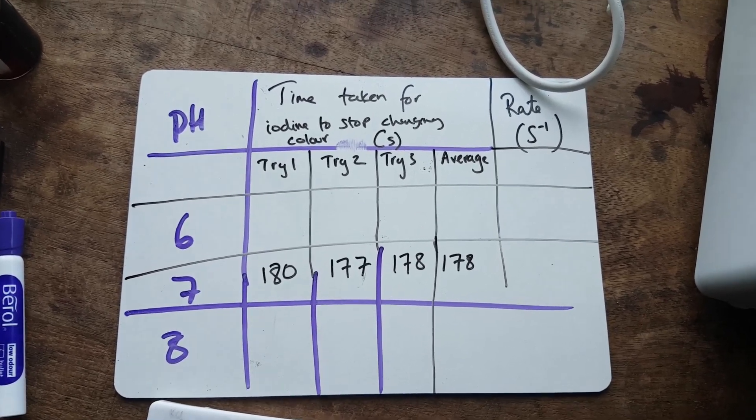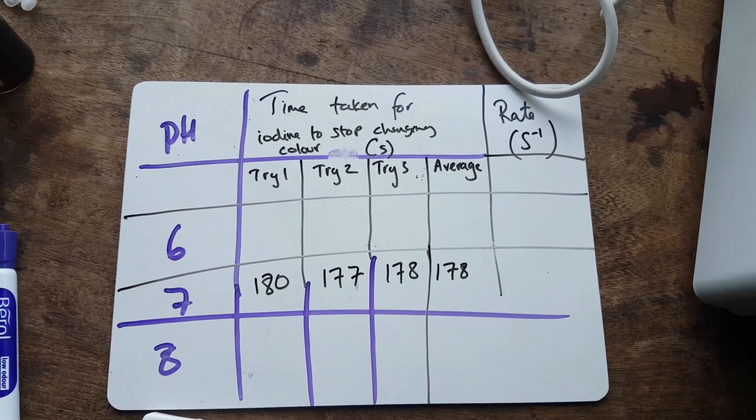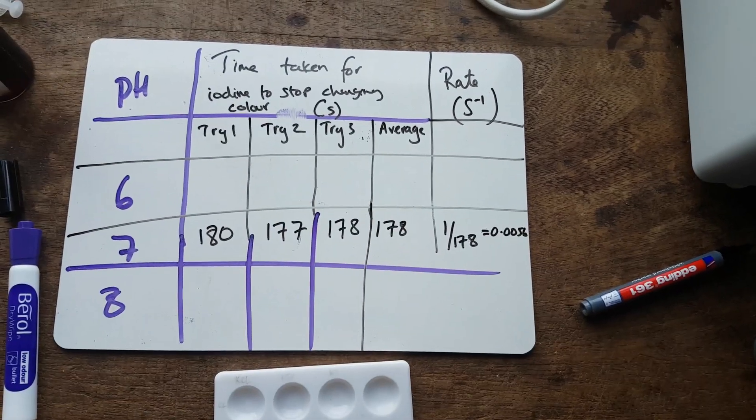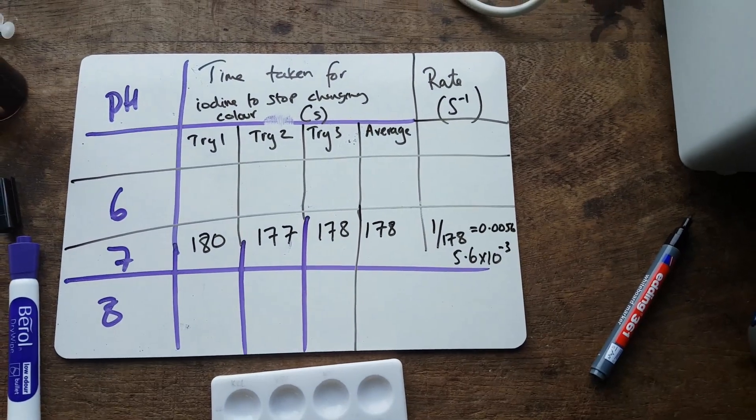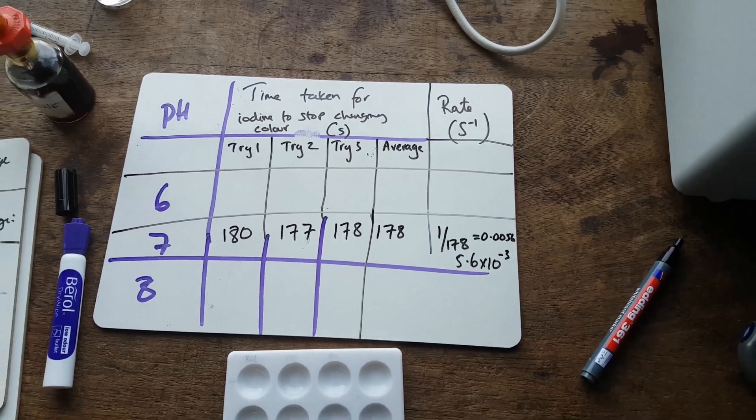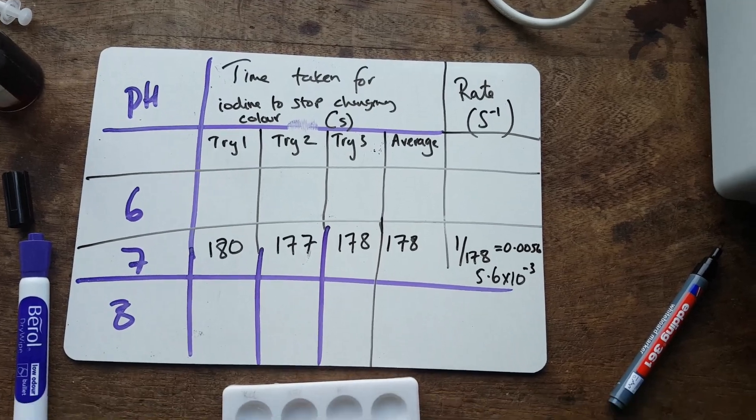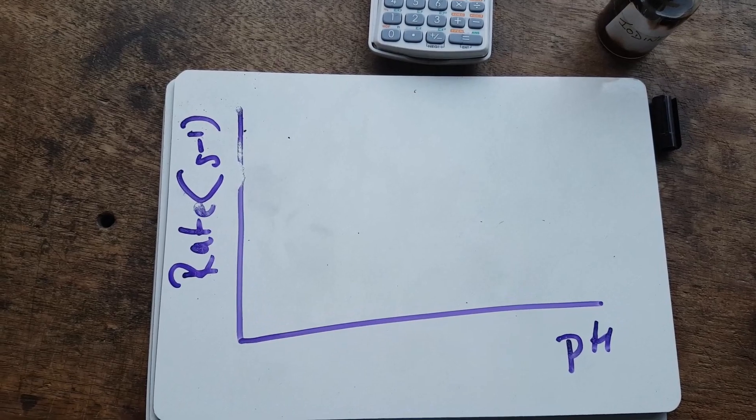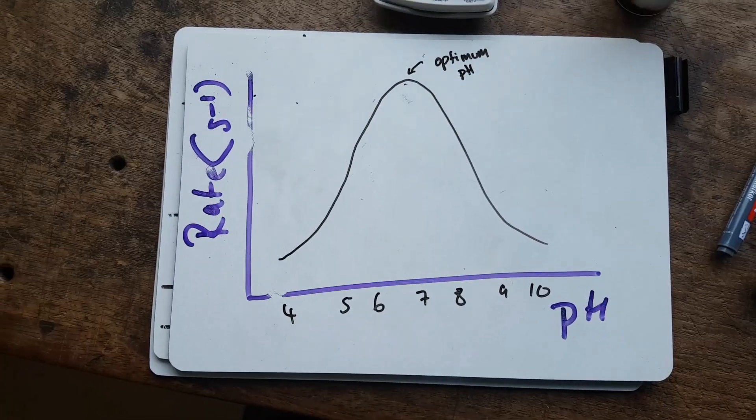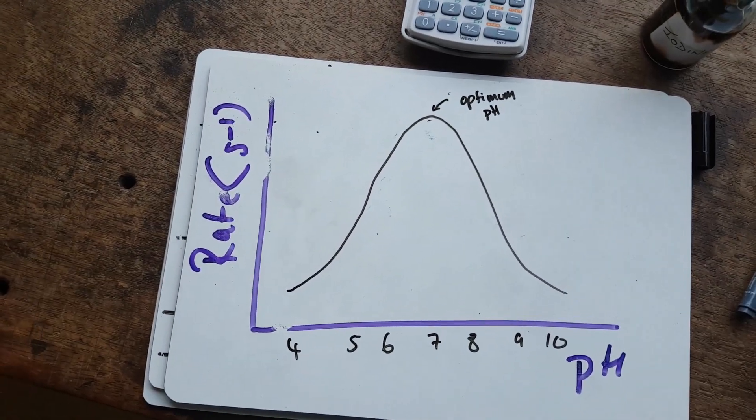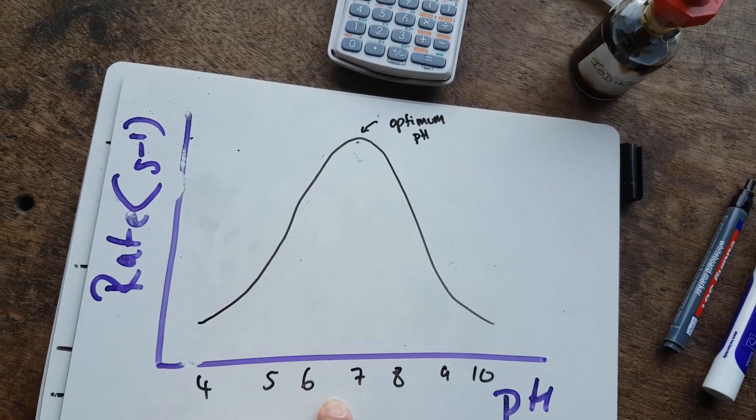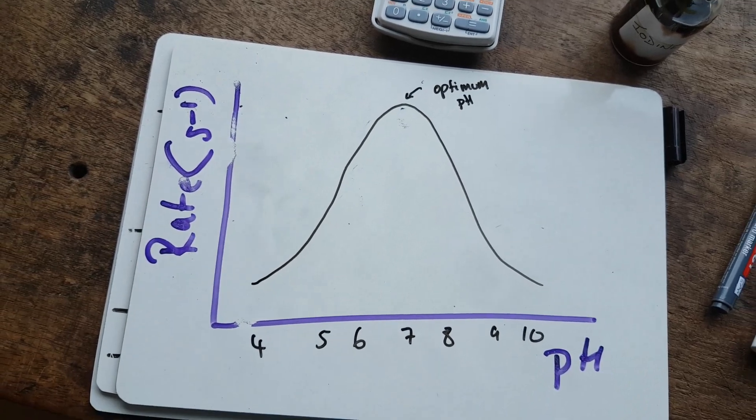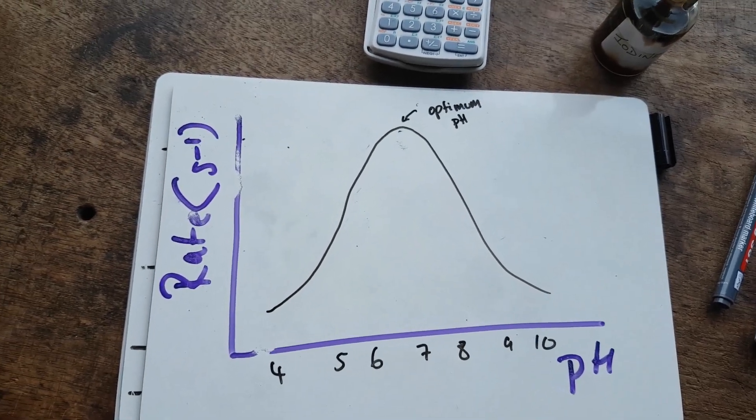Now, to work out the rate, what you do is you do 1 divided by 178, 0.0056, which is the same as saying 5.6 times 10 to the negative 3. And you can do the same for all the other pHs. Then you can plot the rate against pH, and you'll have a graph that looks like this. This is a graph that you're more used to seeing, and it's showing pH 7 is the optimum pH at which there is the most rate of reaction. Wicked.